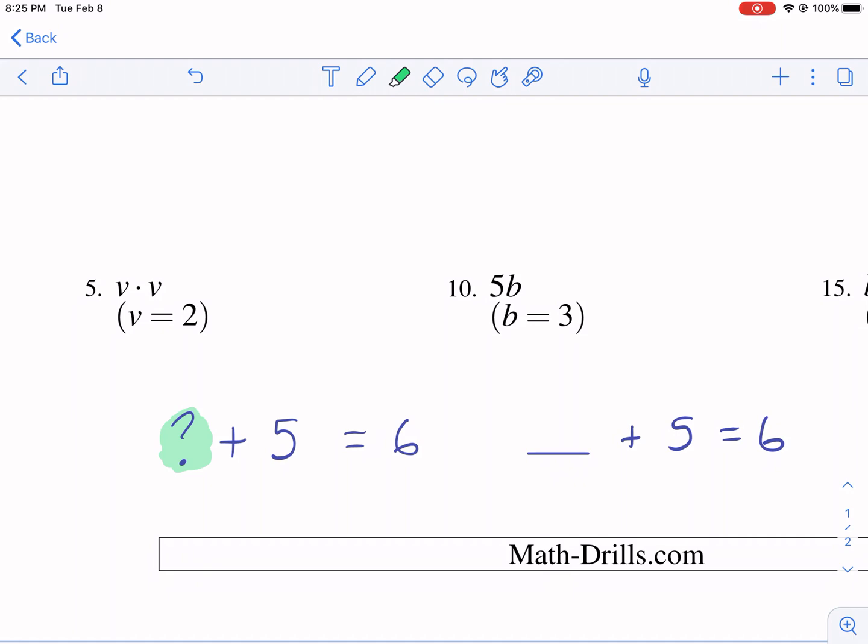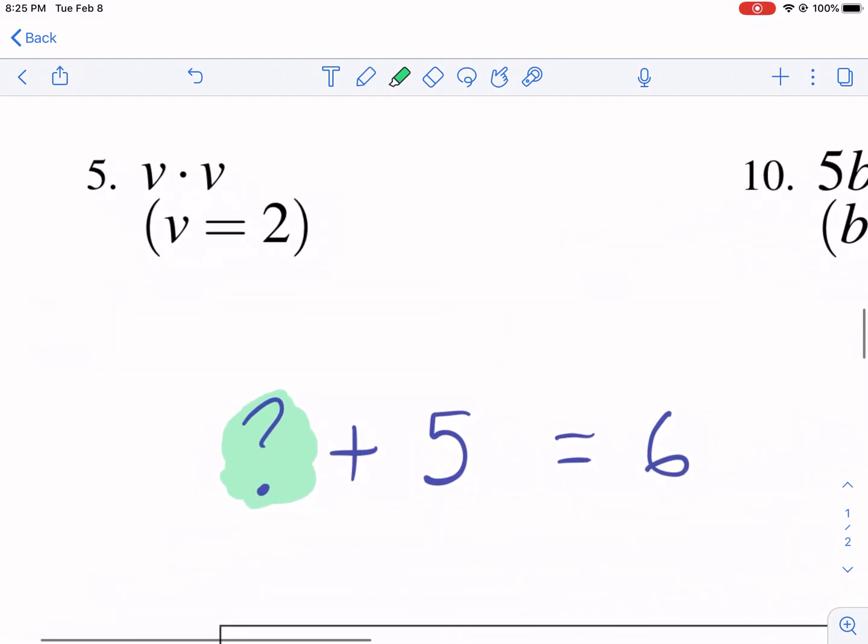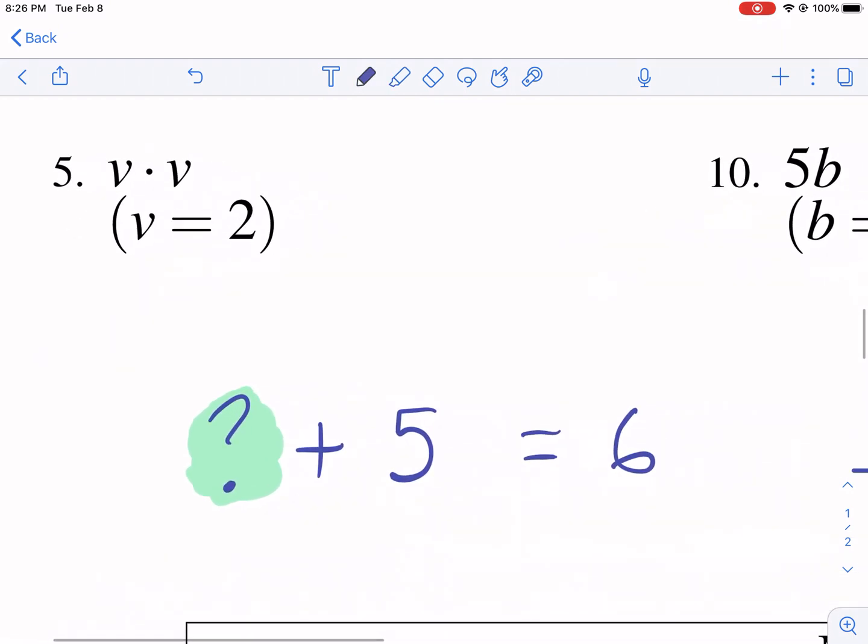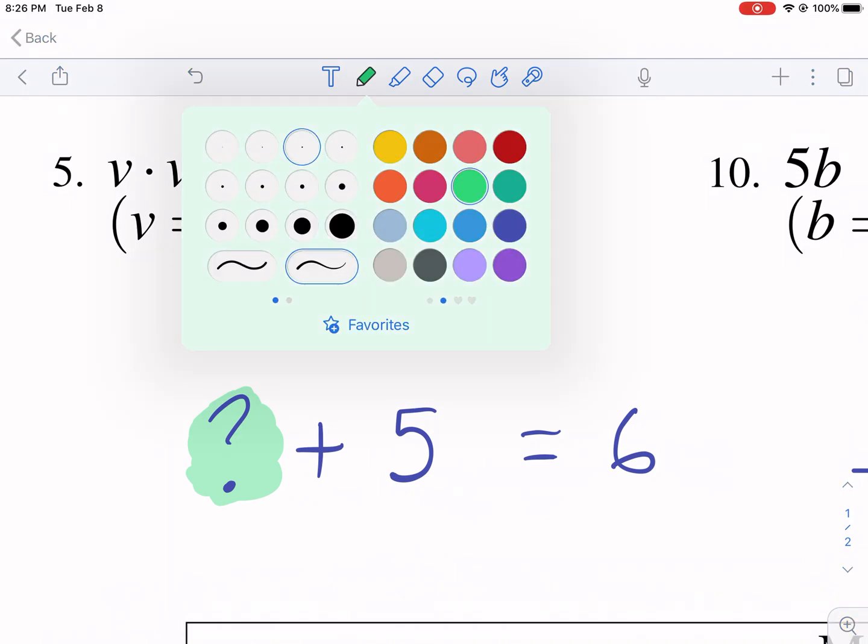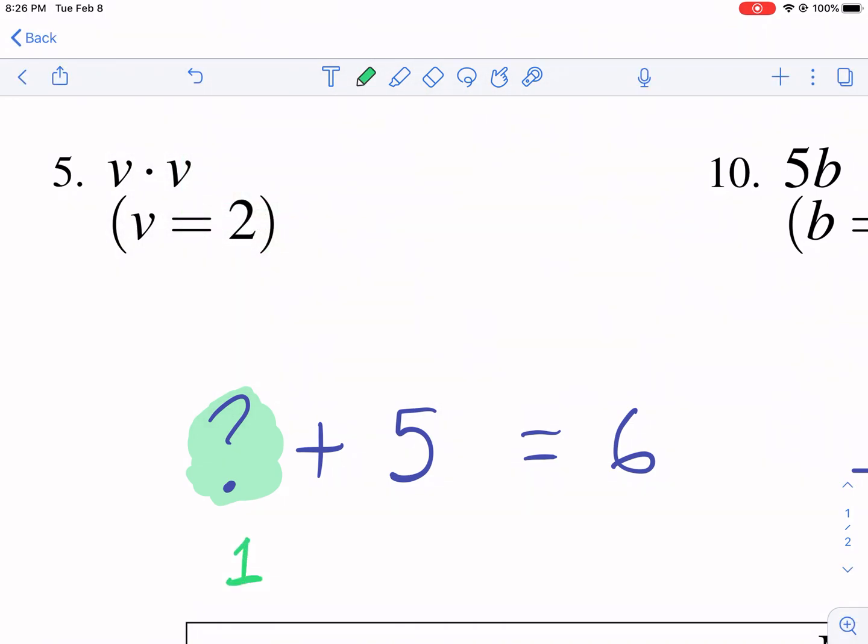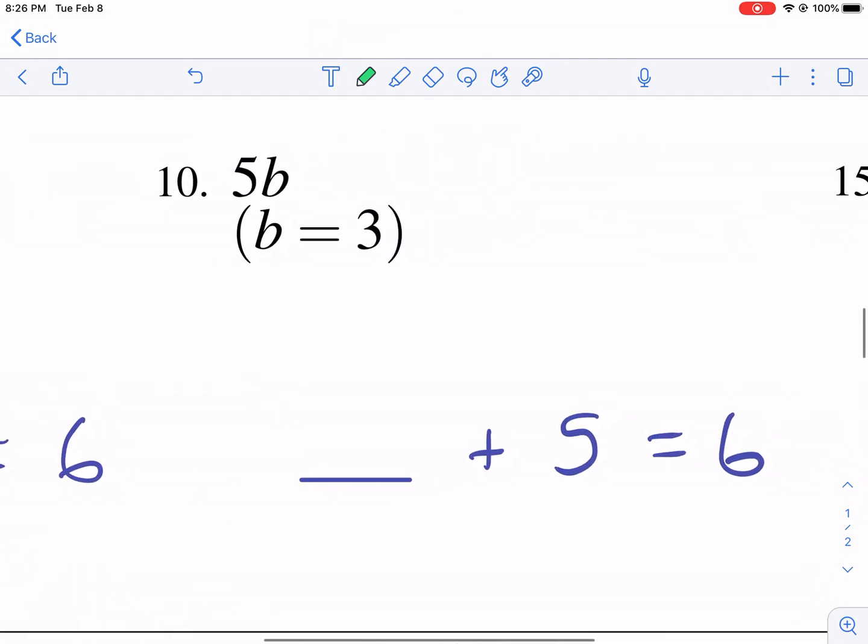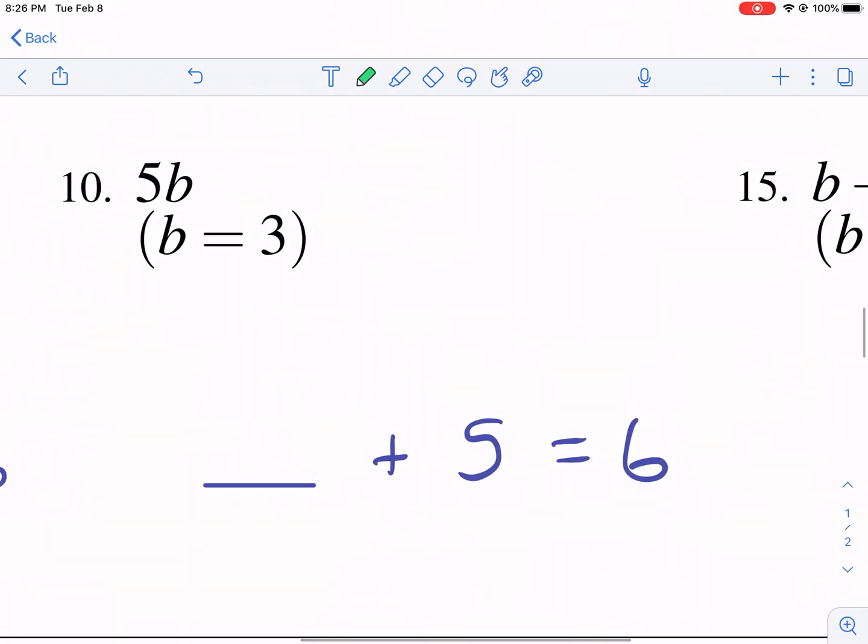So there's an unknown amount which I highlighted, the question mark here, plus 5 equals 6. Well we obviously know that that unknown amount is 1. So 1 plus 5 equals 6. A blank can also be used lots of times. So we have a blank plus 5 equals 6. What's that blank? And that's a 1.